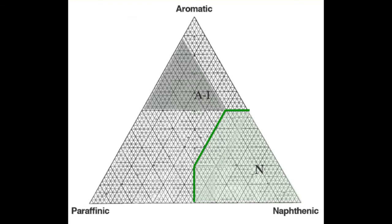Here is an example of how we can use the ternary diagram to determine the blend compositions from individual crude oils. On the ternary diagram, you see two regions shaded. The gray shaded region is the aromatic intermediate region marked by A-I. And the green shaded region, the right-hand side corner, is the naphthenic region.